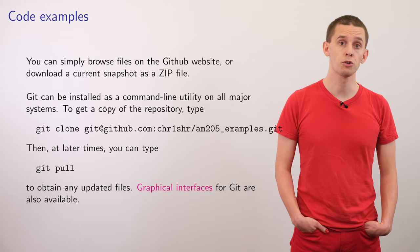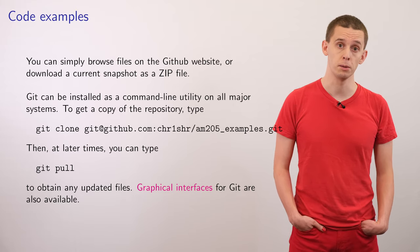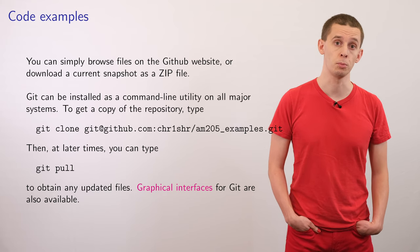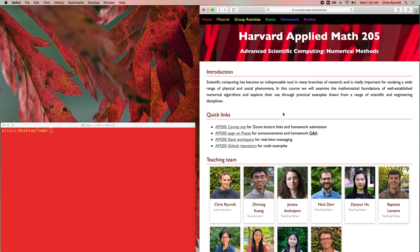If you prefer, there are also graphical interfaces available for GitHub that provide an alternative for interfacing with the repository. So let's just take a quick look at the AM205 GitHub repository. If we go to the main course website, then there's a link to the repository on the front page.